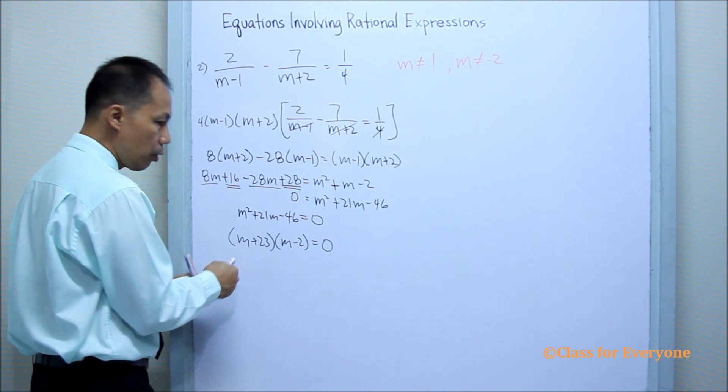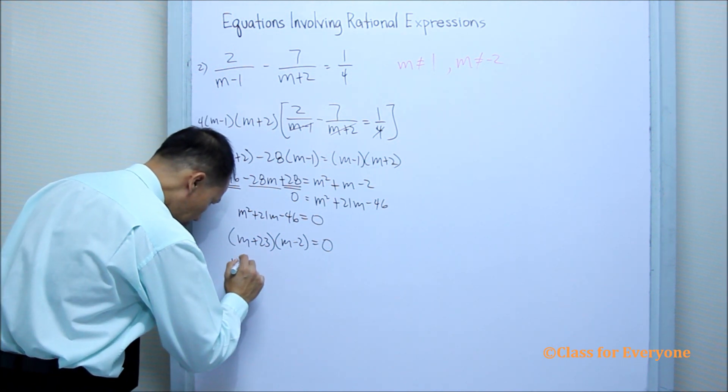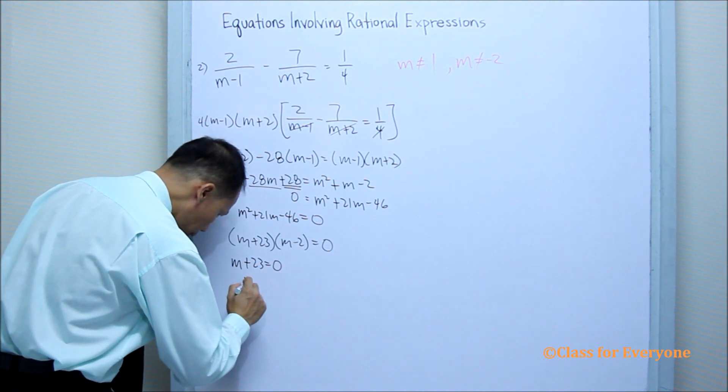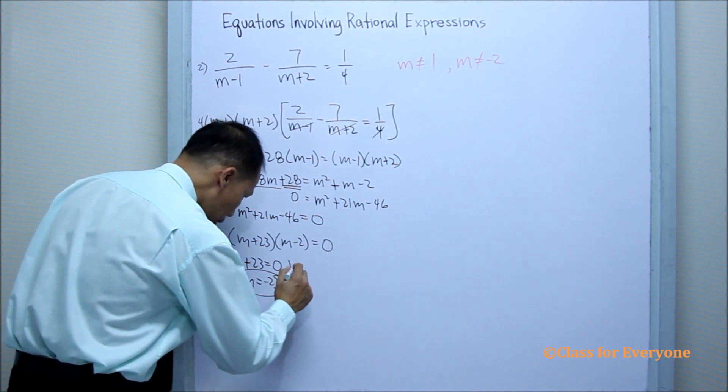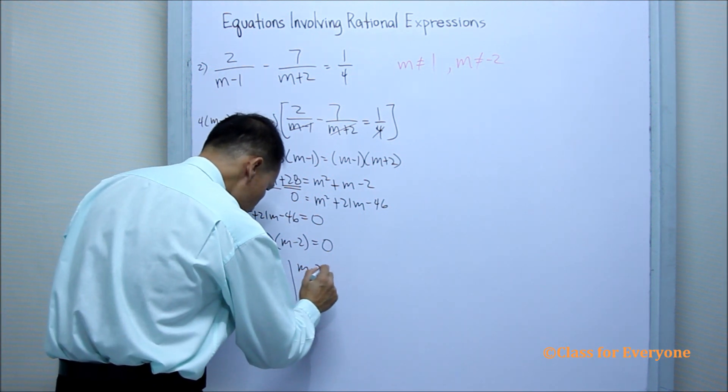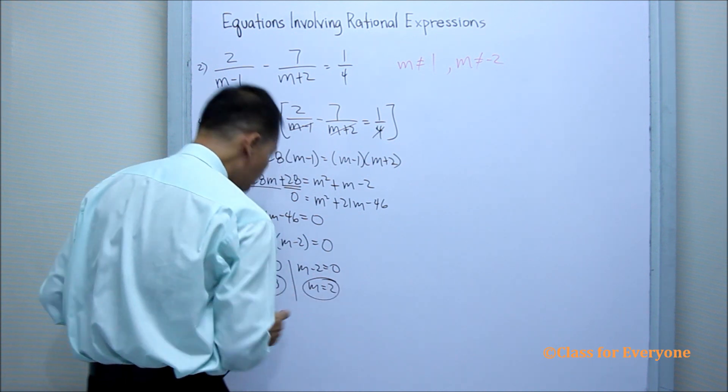So, if my factors are correct, I can now use the zero product theorem. m plus 23 equals 0. Therefore, m equals negative 23. m minus 2 equals 0. Therefore, m is equal to positive 2.